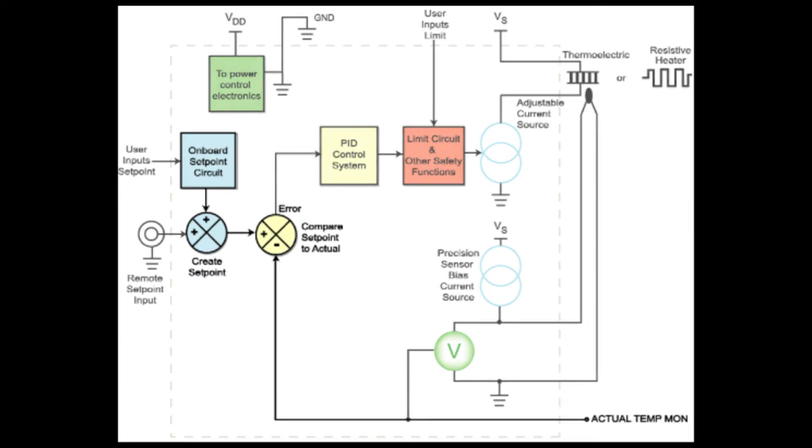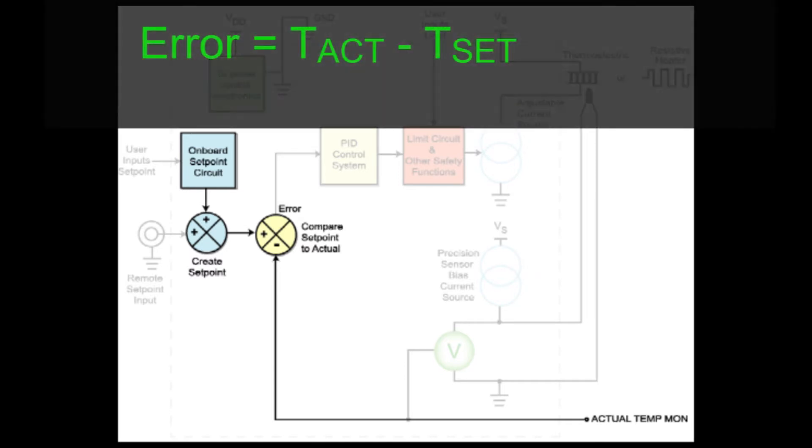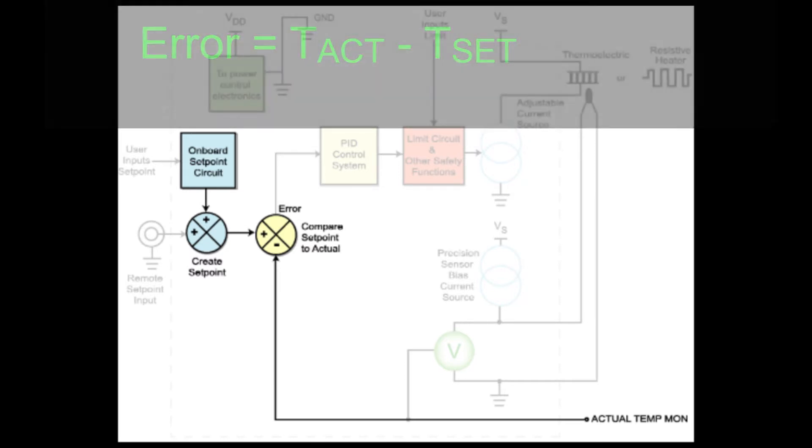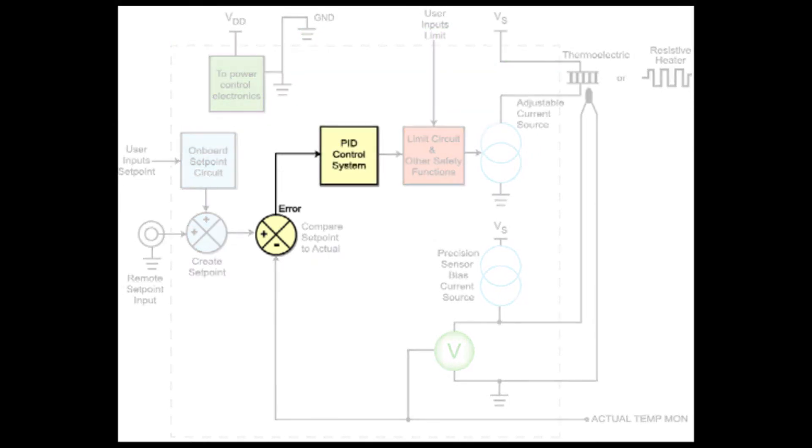To maintain stable temperature at the setpoint, the sensor-reported actual temperature is compared to the setpoint temperature. Subtracting these two voltages yields the error. The PID control system converts the error into a control signal to the adjustable current source. The adjustable current source will then respond to minimize the error. A more thorough discussion of PID control can be found in Tech Note TNTCO1.